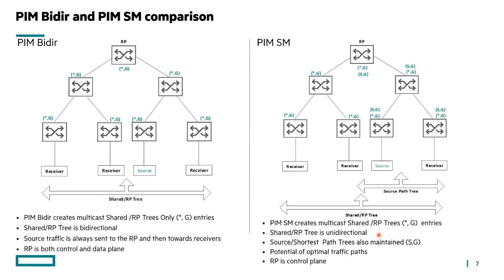PIM sparse mode trees are unidirectional — we can only send source to receiver when building that tree, so we must maintain both the shortest path tree and S,G entries. Sparse mode can optimize traffic by taking shortest path trees, and the RP is in the control plane only. A very important difference: in PIM bidirectional, the RP is both in the control plane and the data plane because the RP is always in the path.